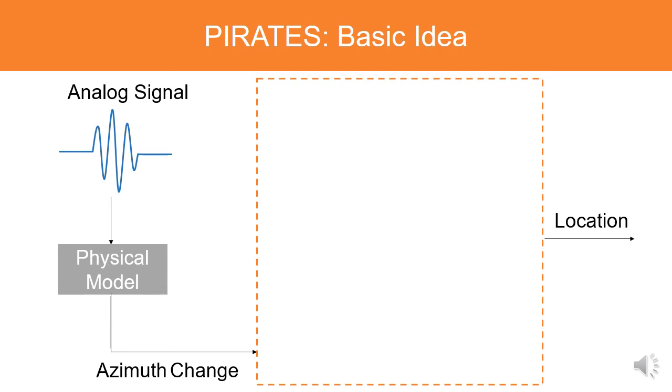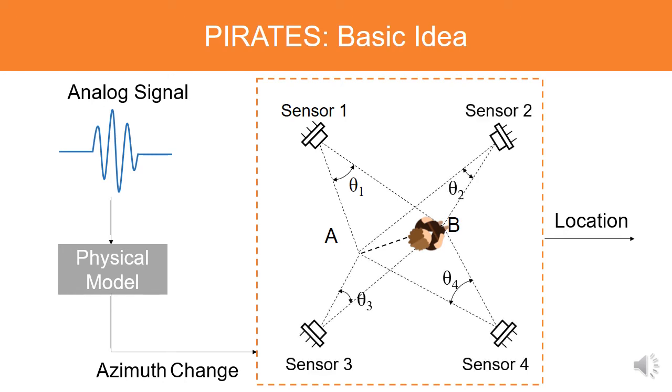Specifically, the azimuth change is a value that is much related to a person's location. For example, when a person moves from A to B, his azimuth change to sensor 1 is theta 1. Second, after achieving the person's azimuth changes to several PIR sensors, we build up an equation set about the person's azimuth change and locations. After solving this equation set, the person's location can be obtained.